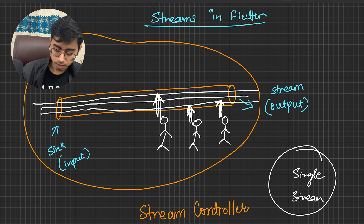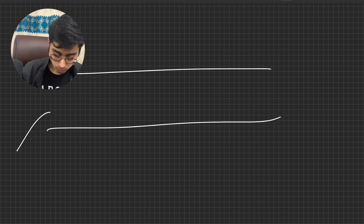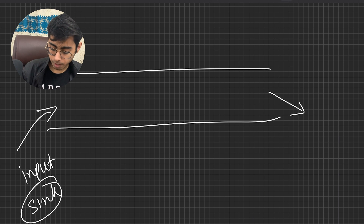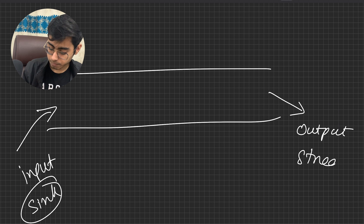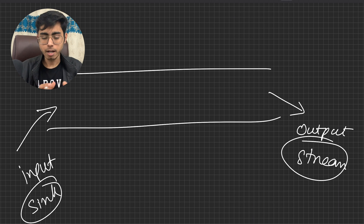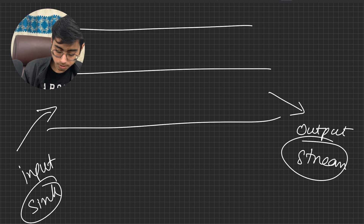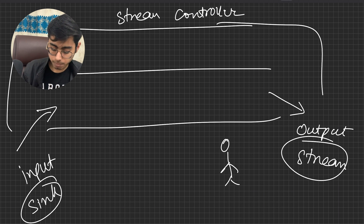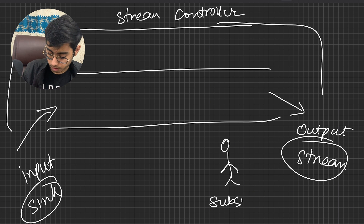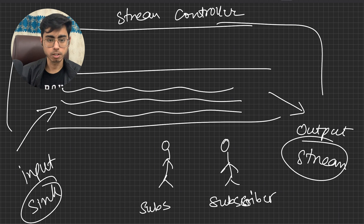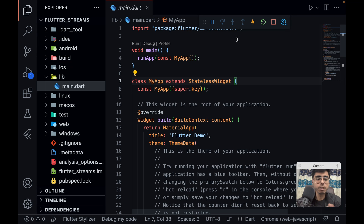Just to revise: a Stream is like a river. The input is called Sink — it's a function we use to put data inside the stream. The output is called Stream — also a function or data stream. To get the data you write streamController.stream. This complete system is called a StreamController. Widgets that listen to this data stream are called subscribers. Multiple subscribers require multiple streams flowing inside the StreamController.